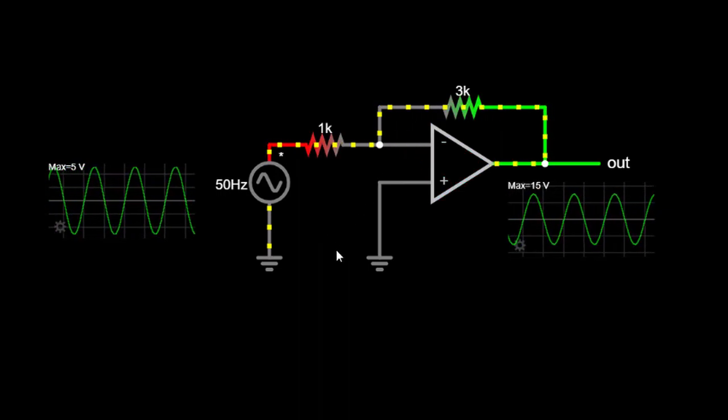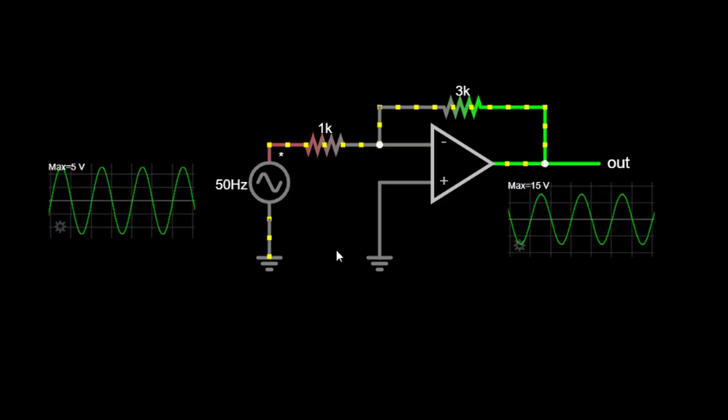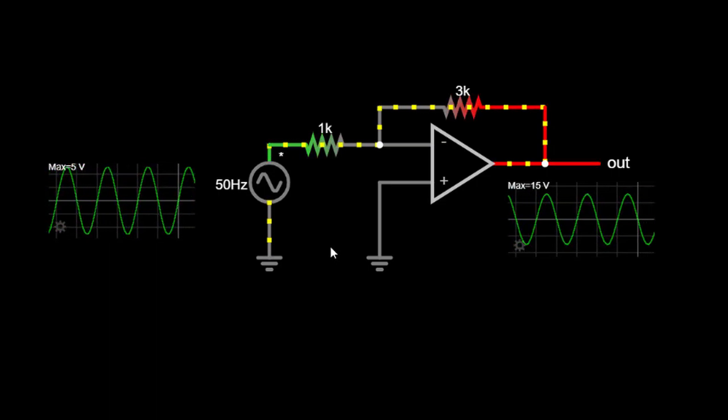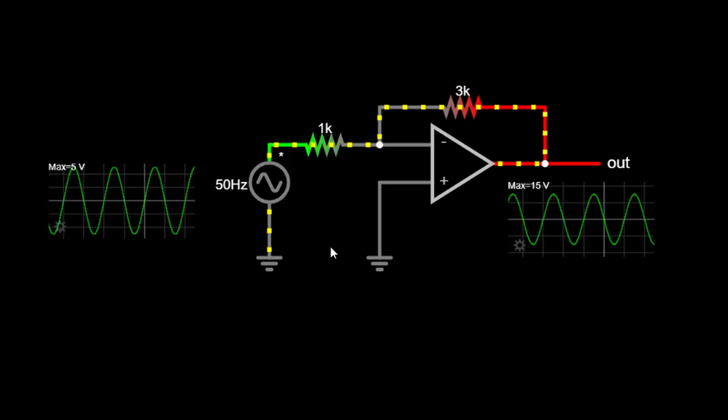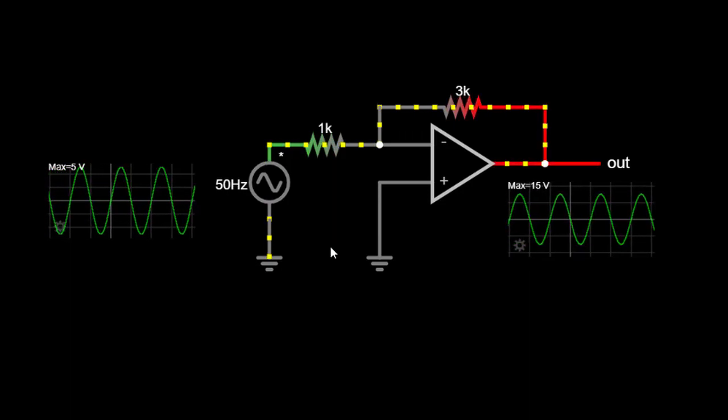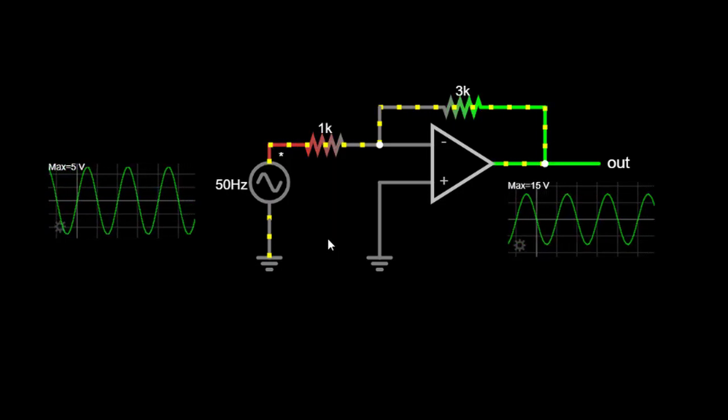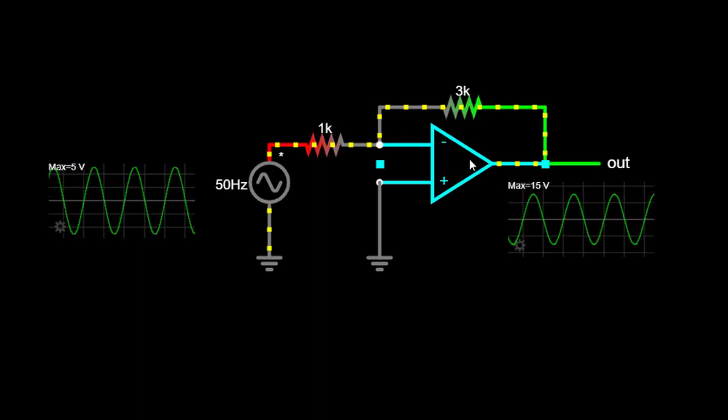Now, let's take a look at the circuit simulator to visualize how the inverting amplifier works. In our simulation, we have an operational amplifier, OPAMP, represented by a triangle symbol, and a few external components.